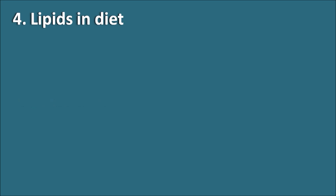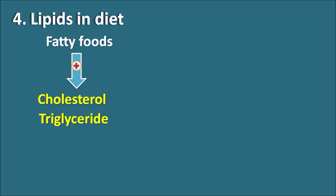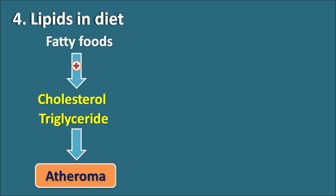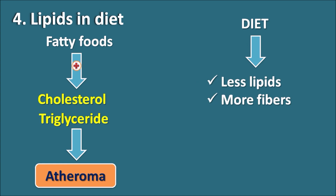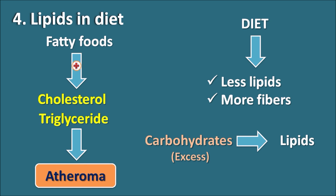The fourth risk factor is lipids in the diet — one of the risk factors most directly associated with atherosclerosis. Fatty foods can increase cholesterol as well as triglycerides within the body, and both may cause formation of atheroma. The risk is greater with cholesterol compared to triglycerides, but triglycerides can also contribute to total cholesterol. We should take a diet lower in lipids and higher in fiber. Note that excess carbohydrates taken as a replacement for lipids can also be converted to lipids within the body, further increasing atherosclerosis risk. A diet rich in fiber with carbohydrates at an optimal level is recommended.